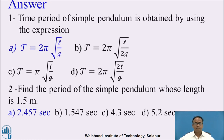These are the answers. The time period of a simple pendulum is given by T = 2π √(L/g). We can also find the period for another problem using the same expression; for a pendulum with length 1.5 meters, the period works out to 2.457 seconds.